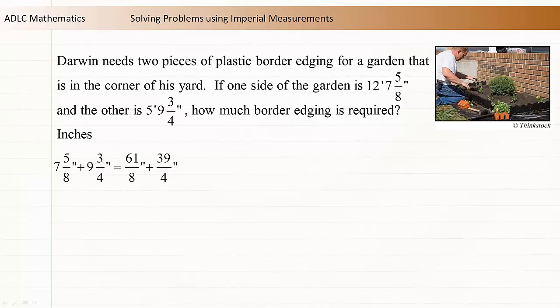Before adding these values, the two denominators must be made the same. The lowest common denominator of these improper fractions is 8. The second fraction can be multiplied by 2 divided by 2 to make both denominators the same. Now that both denominators are the same, we can add the numerators. So altogether there are 139 eighths inches.